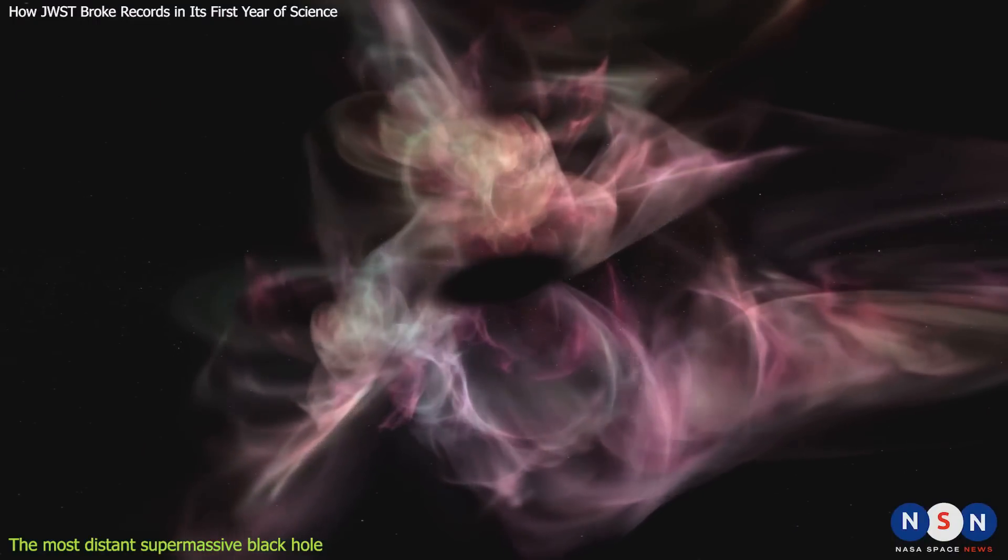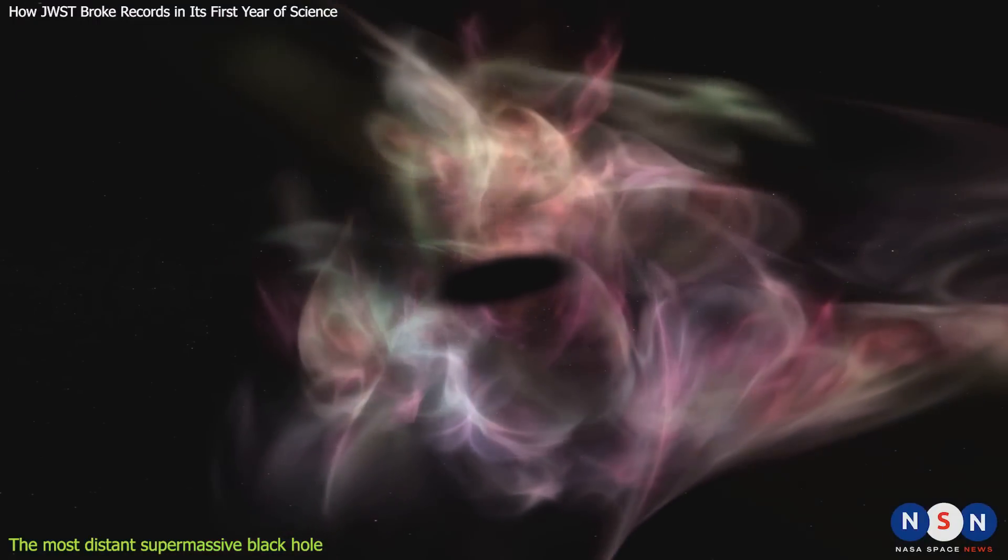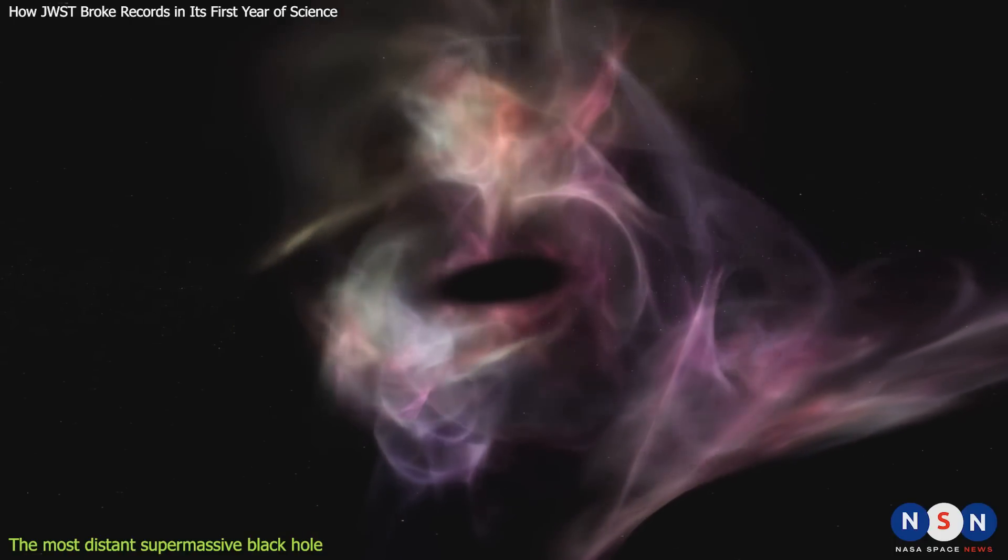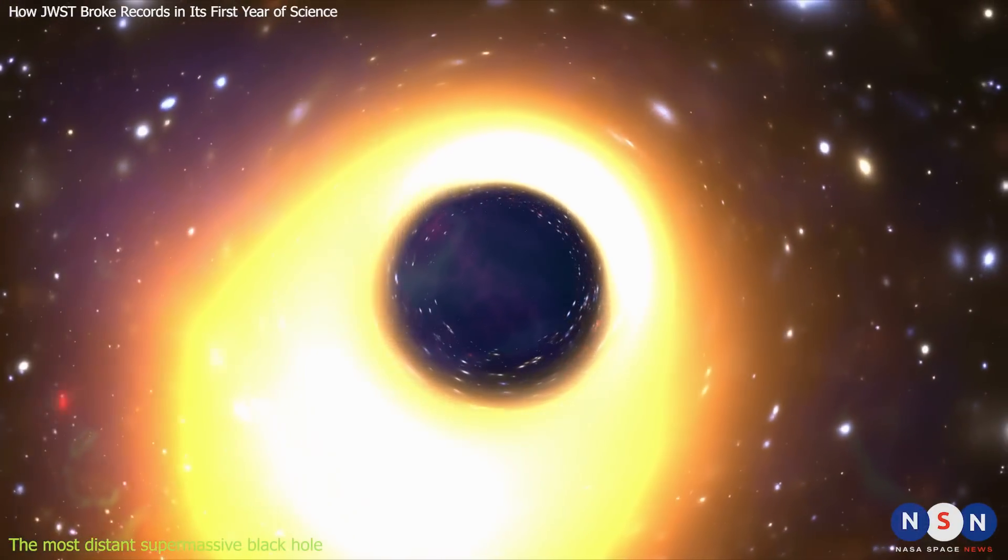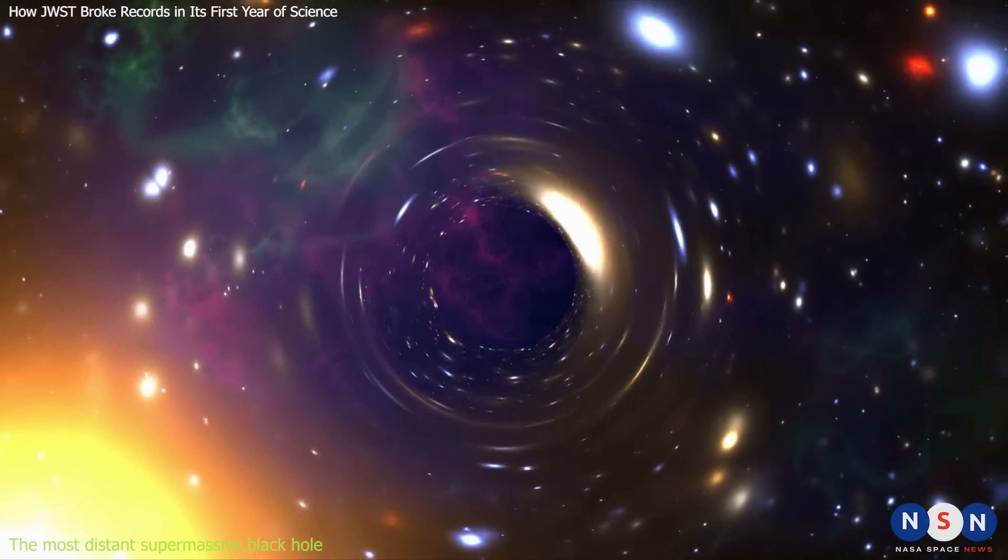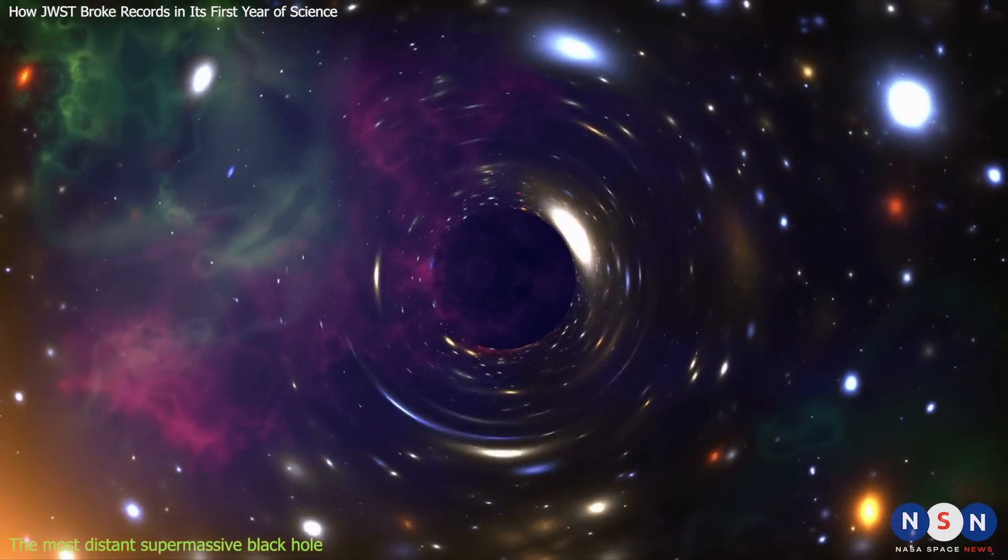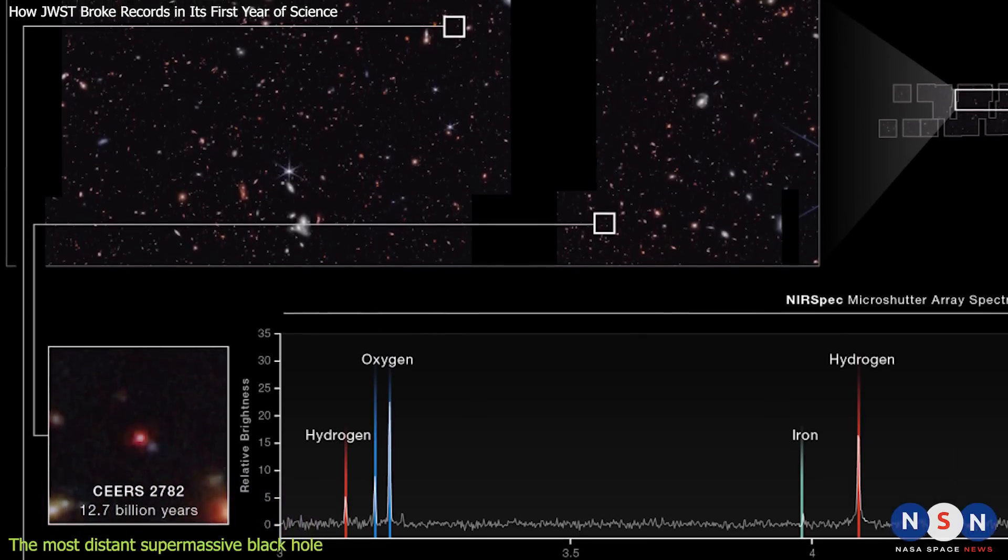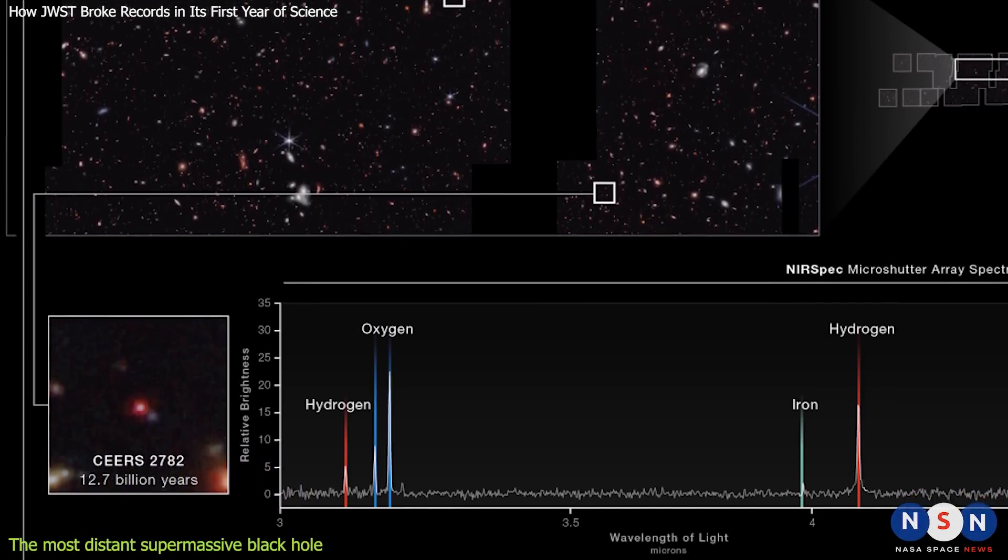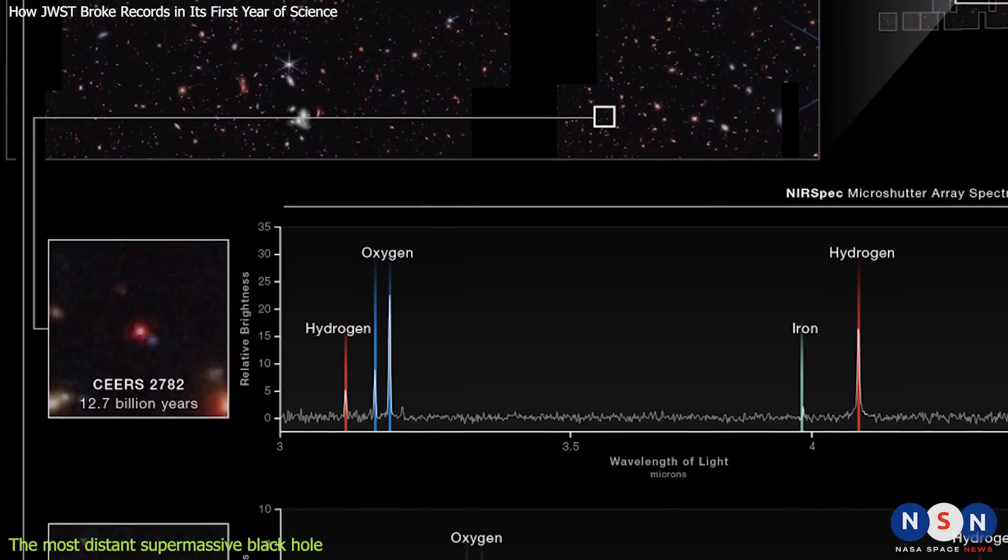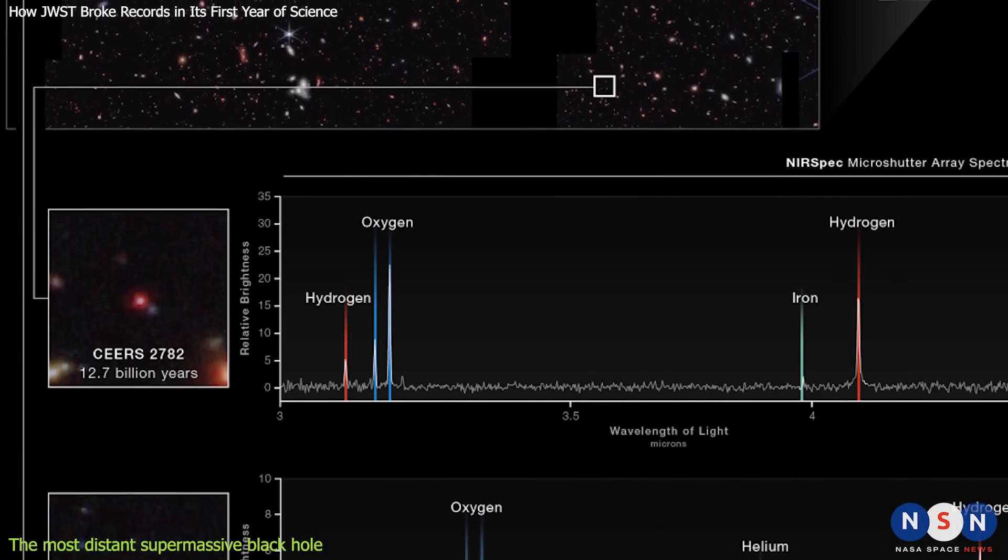Alternatively, the black hole could have formed from a direct collapse of a massive cloud of gas without going through a star formation stage. This scenario would require very special conditions, such as low metallicity and strong radiation from nearby stars or galaxies. This discovery challenges our current models of black hole formation and growth in the early universe. It also opens up new possibilities for studying how these ancient monsters influence their environments and shape the structure of the cosmos.